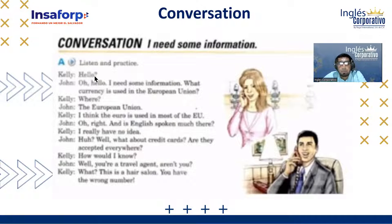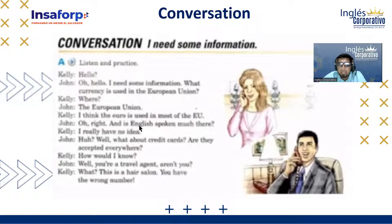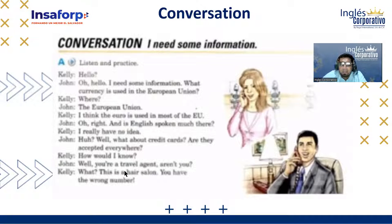Kelly and John, this is how it goes. [Kelly:] Hello. [John:] Oh, hello. [Kelly:] I need some information. What currency is used in the European Union? [John:] Where? The European Union. I think the euro is used in most of the EU. [Kelly:] Oh right. And is English spoken much there? [John:] I really have no idea. [Kelly:] What about credit cards? Are they accepted everywhere? [John:] How would I know? [Kelly:] Well, you're a travel agent, aren't you? [John:] What? This is a hair salon. You have the wrong number. Do you guys need to clarify any words, or is everything clear?